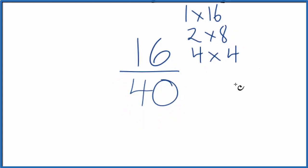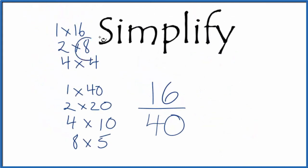And then for 40, we end up with... So I can see that 8, 8 is going to be the largest common multiple for 16 and 40.